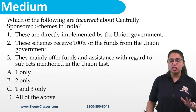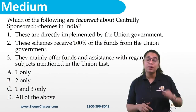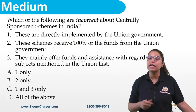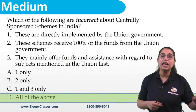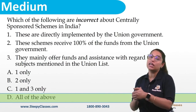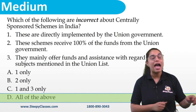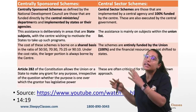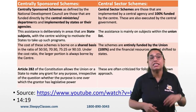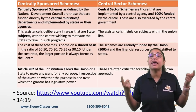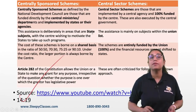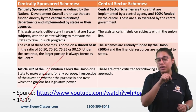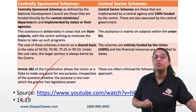Next is a medium-level question: pay careful attention to whether it asks for correct or incorrect statements — students often miss this under exam pressure. Here it asked for incorrect statements, and the correct answer is D — all of the above. All three statements were incorrect because they actually apply to Central Sector Schemes, not Centrally Sponsored Schemes. The distinction between these two is very important for governance and was covered in-depth in the premix.